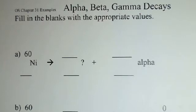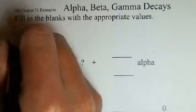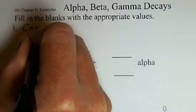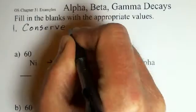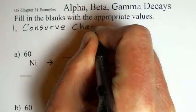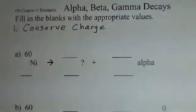Now in working these types of problems, there are two rules that you should follow. One is that you must conserve charge, that is the bottom number on our symbols here. So we'll have a certain number on the left, we'll have the sum of numbers on the right, those must match.